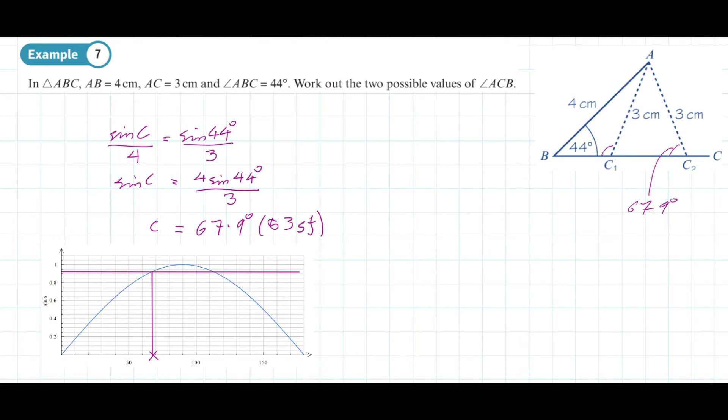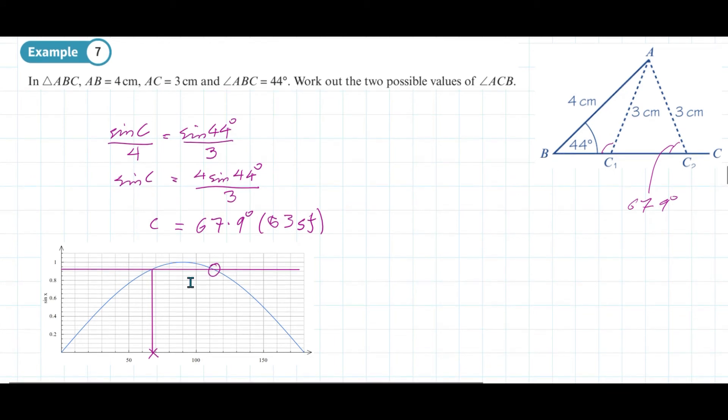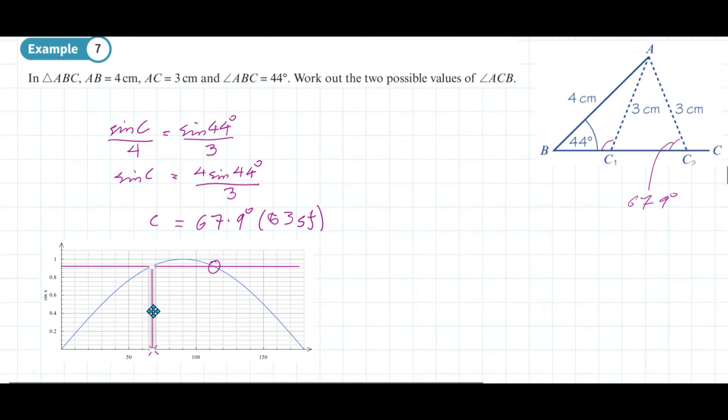We're after the other angle which has a sine of 0.92. We can use symmetry of the graph about 90 degrees to help us work that one out, or we can take the 67.9 degrees away from the 180 to help us work that one out.